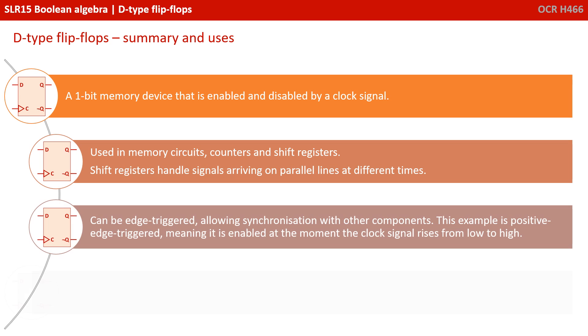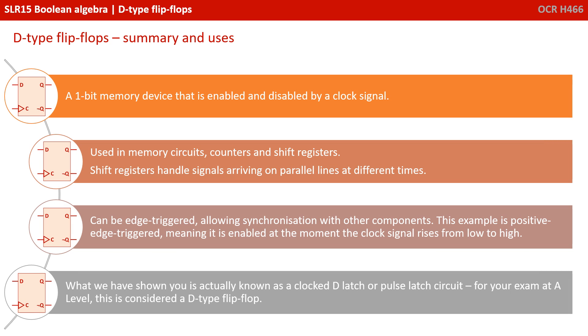Let's summarize the basics. A D-type flip-flop is a 1-bit memory device that's enabled and disabled by a clock signal. It's used in memory circuits, counters and shift registers. Shift registers handle signals arriving on parallel lines at different times. It can be edge-triggered, allowing synchronization with other components. This example that we talked through is a positive edge trigger, meaning it's enabled at the moment the clock signal rises from low to high.